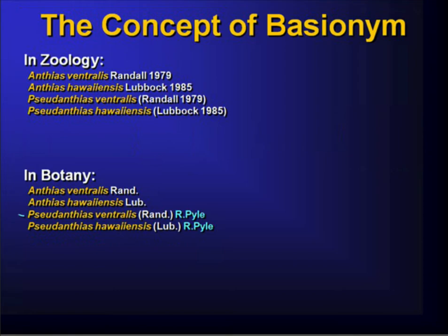A quick note on the concept of a basionym. A basionym is basically the relationship between a new combination and its original combination — so the ventralis epithet in Pseudanthias ventralis points back to the same ventralis in the original combination. It's really just a pointer back to the original combination of a name. Zoology doesn't use the word basionym, but the concept does exist; we just don't need a word for it because we don't track who made the new combination.